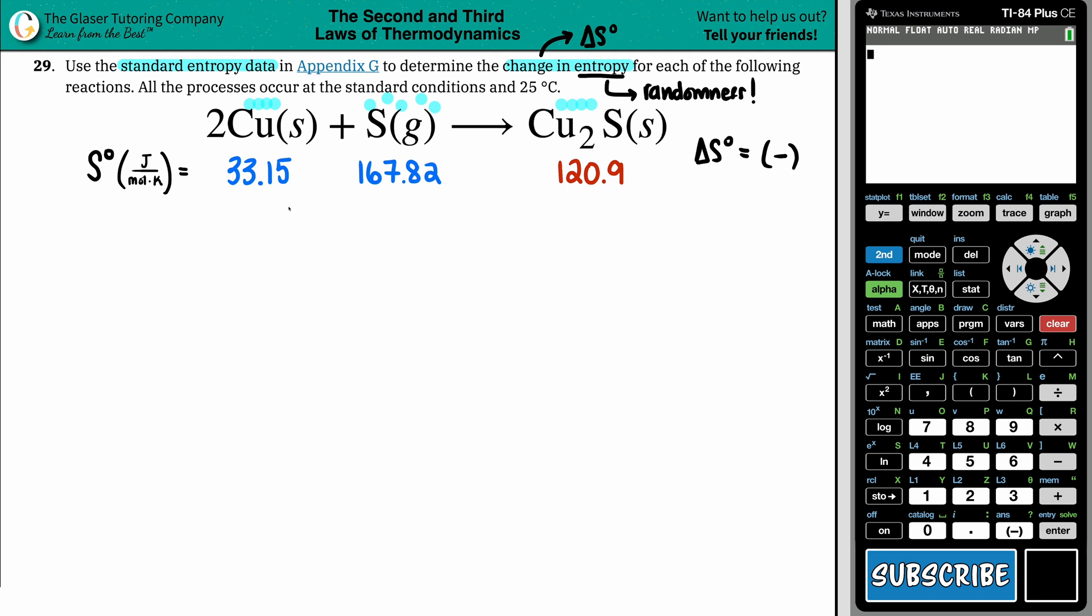Now, I did go to the back of the textbook for you to find those S values. So for copper solid, it's 33.15 joules per mole times Kelvin. Sulfur is 167.82. And Cu₂S is 120.9.